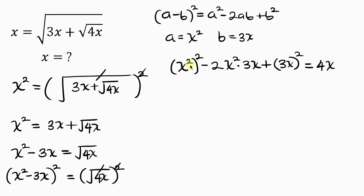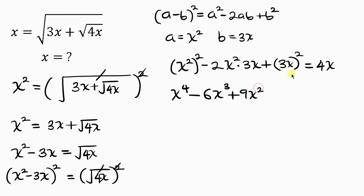Simplifying using index laws — multiplying powers — 2 times 2 gives 4, so x squared squared becomes x to the fourth. Then 2 times x squared times 3x gives 6x cubed. And (3x) squared gives 9x squared. So we have x to the fourth minus 6x cubed plus 9x squared equals 4x.